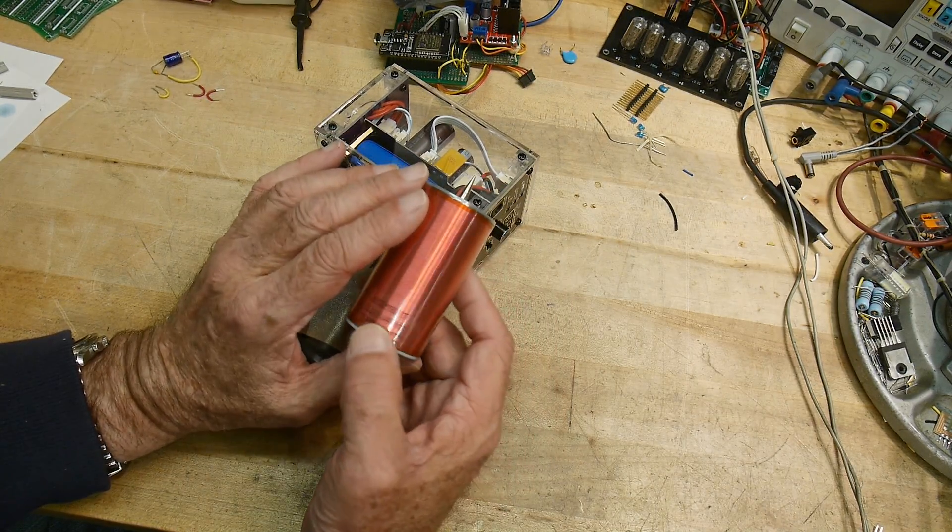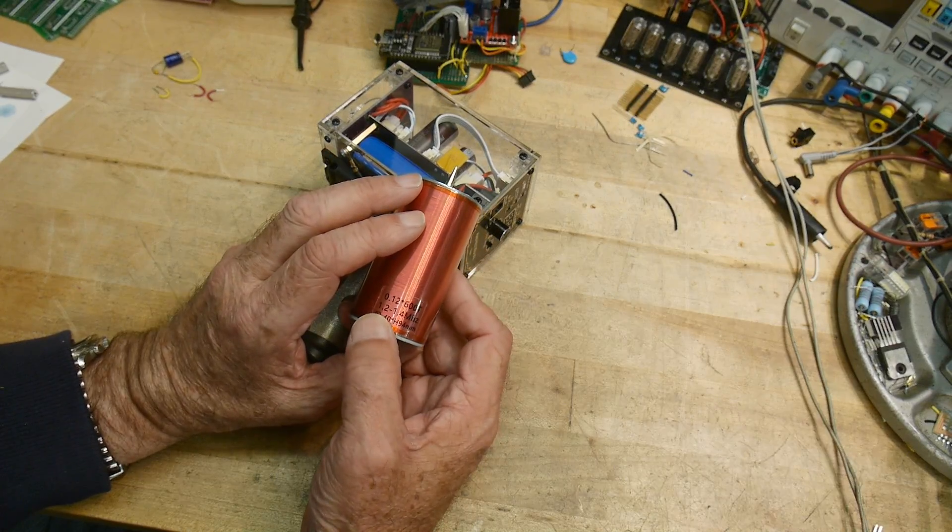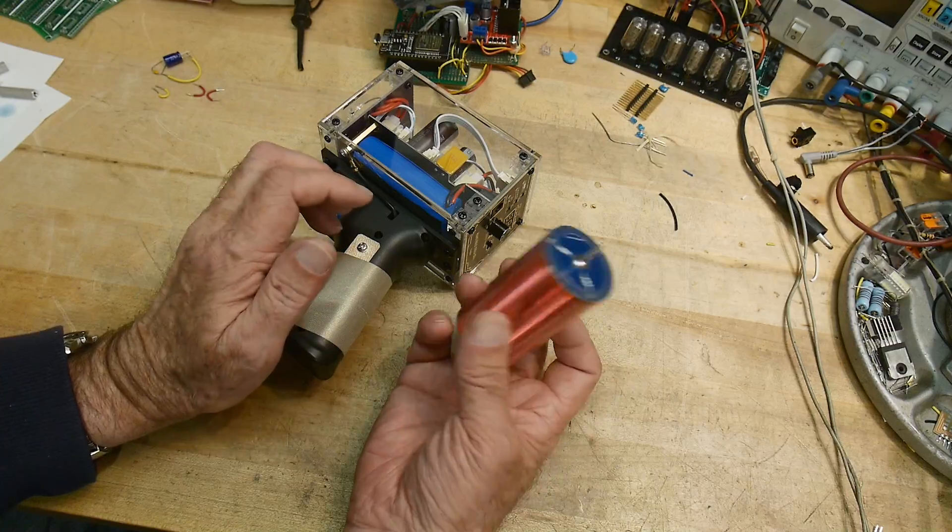800 turns of 0.12 millimeter wire. It's resonant at 1.2 to 1.4 megahertz, and yeah, so Tesla coils are resonant.